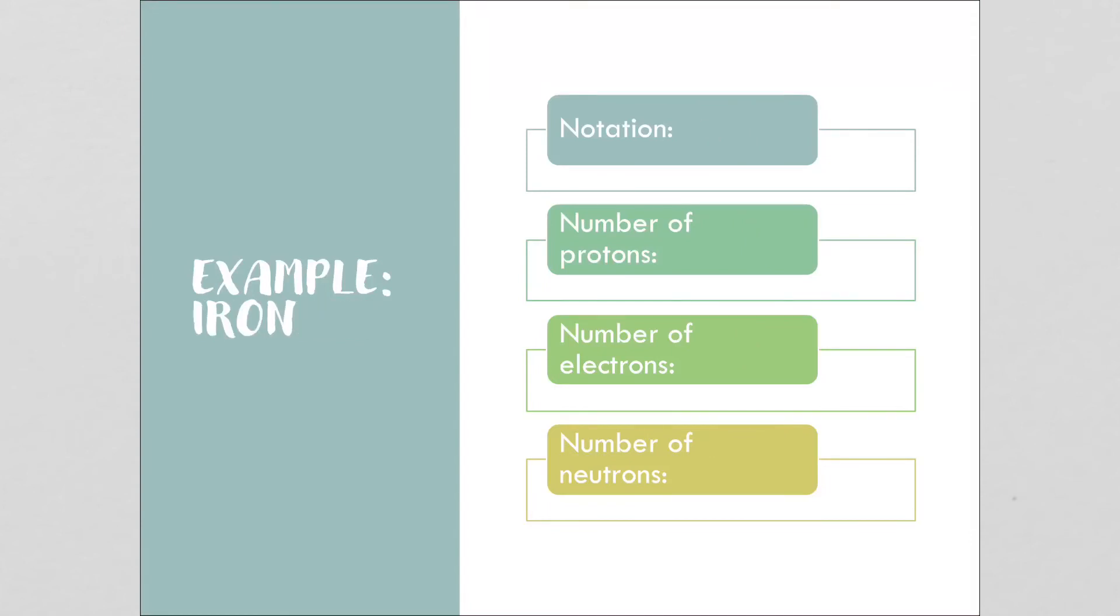Our next example is iron. Depending on the periodic table you look at, you may have a decimal place. The atomic mass, I'm going to round this one. Mine says 55.847, we're just going to write 56 for the atomic mass. Our atomic number is 26. The number of protons is 26, it matches the atomic number. The number of electrons is 26, which matches the atomic number. The number of neutrons is 30, so 56 minus 26.